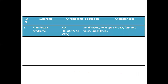Next is Klinefelter syndrome. The most common manifestation is XXY; other possible combinations include triple X-Y or double X double Y. The characteristics are small testes, developed breasts, feminine voice, and knock knees. However, there is not much effect on their mental status — they are quite normal in terms of mental status.